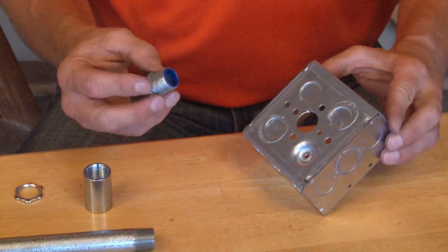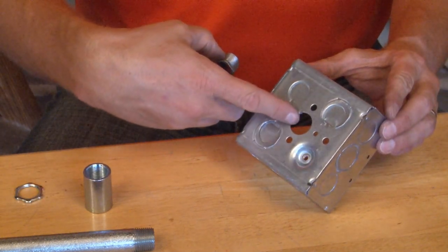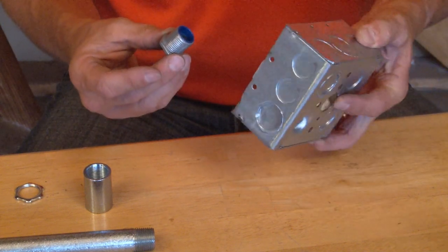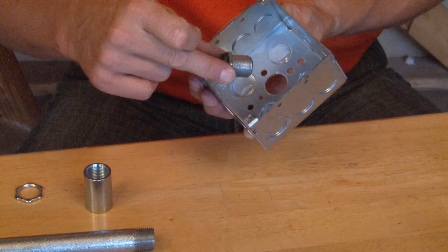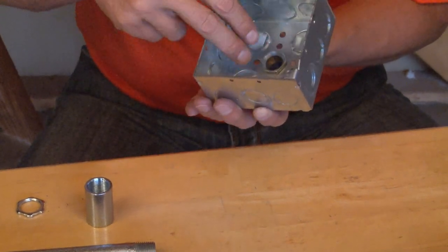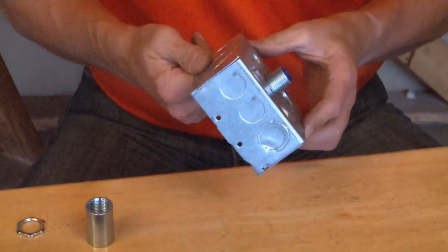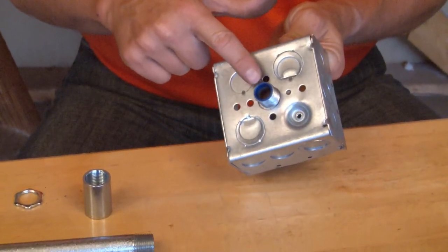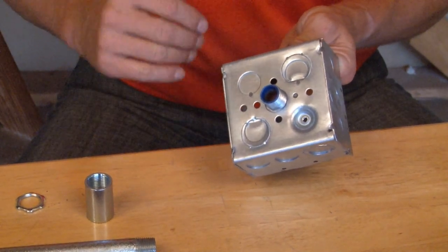For purposes of this demonstration, I have removed a half inch knockout from the center of a box. To install this product, you simply reach inside the box and place it through the center of the open knockout hole. As you can see, the threads are generous and they extend about a full half an inch out from the box.